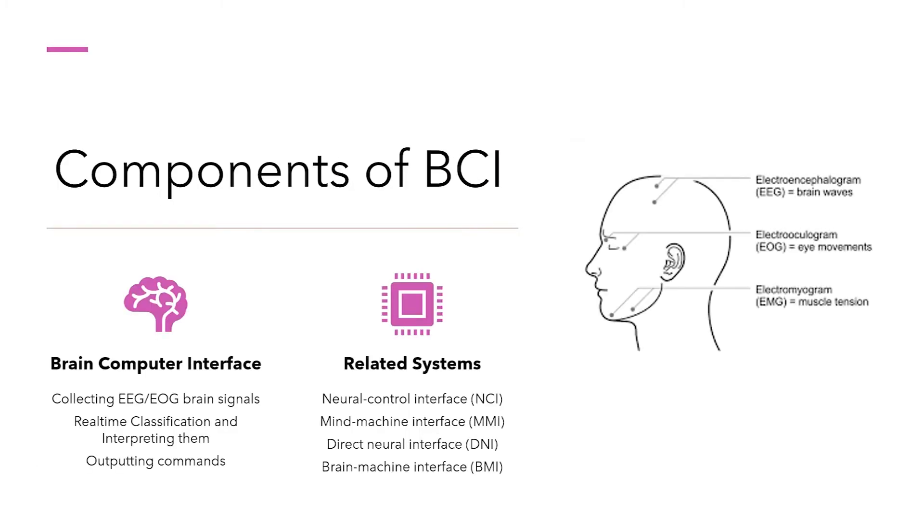Most popular brain neural signals can be categorized as EEG and EOG signals. Classifying means a range of groups according to their observed similarities. Streaming data, also real-time classification. Outputting command could be controlling a robotic arm or controlling a mouse using our own thoughts.